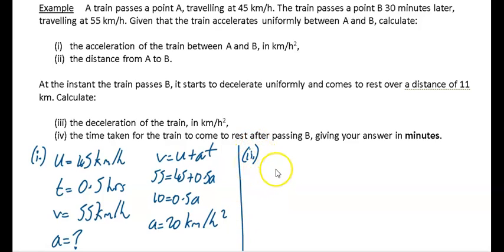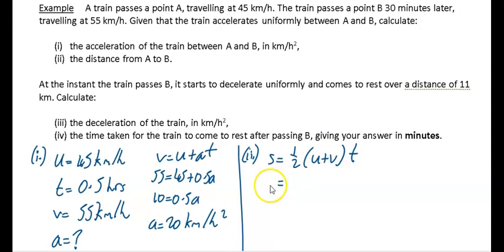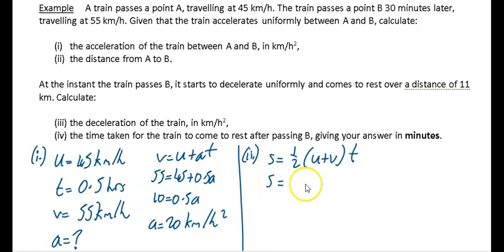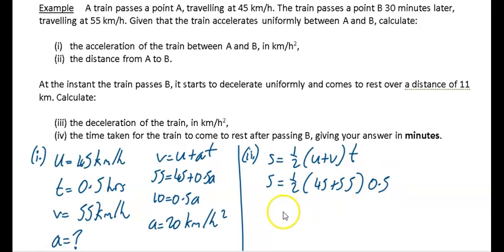Part two: calculate the distance from A to B. Using s = ½(u + v)t with u = 45, v = 55, t = 0.5: s = ½ × 100 × 0.5 = 25 kilometers.